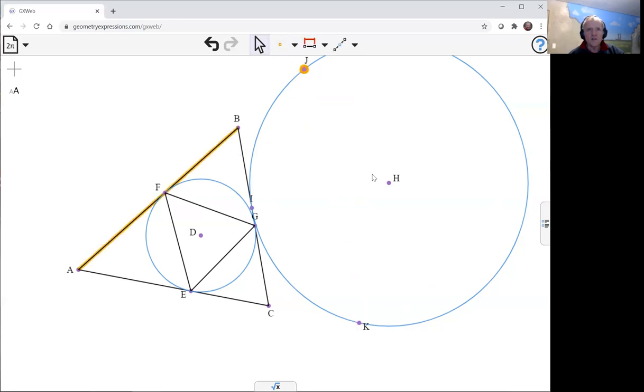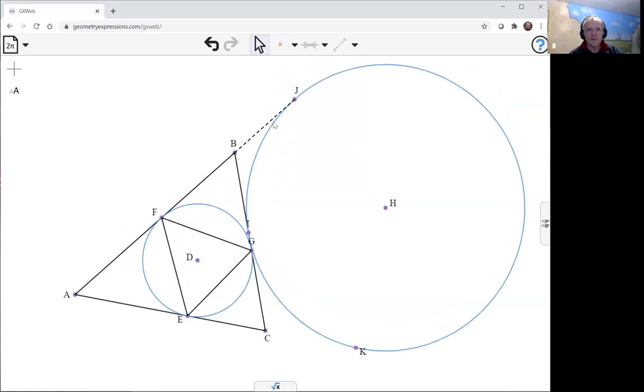So J defined to be incident to AB really means incident to the extension thereof, and we get a little extension provided when we do that incidence constraint. And I'll make K incident to that line there.